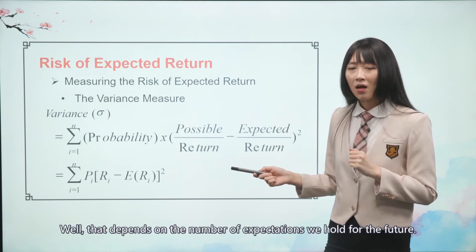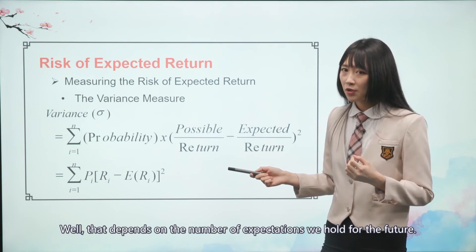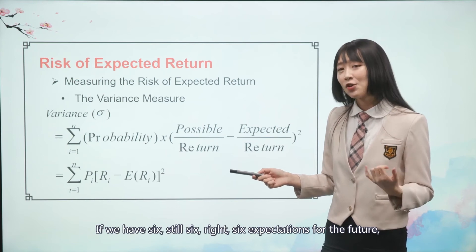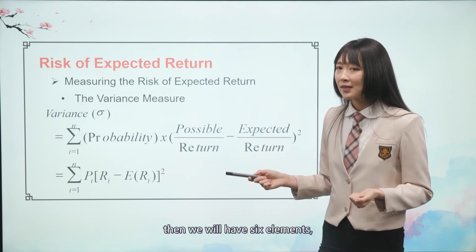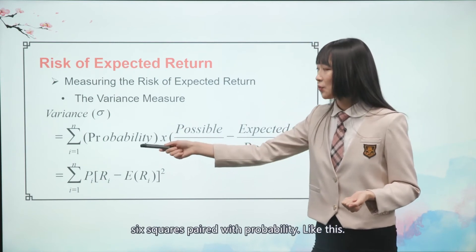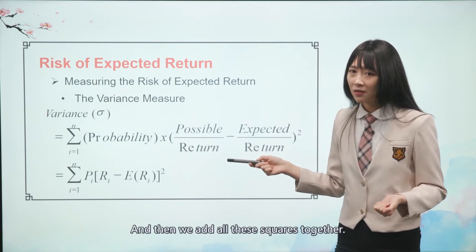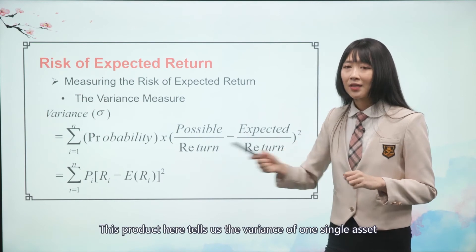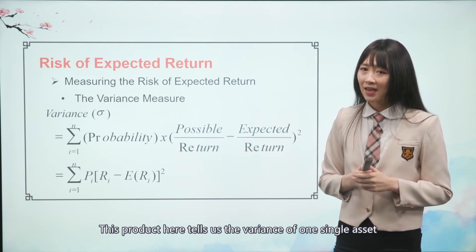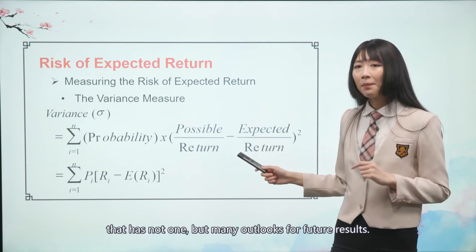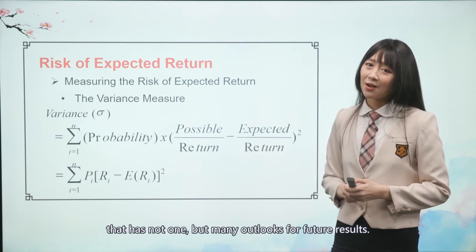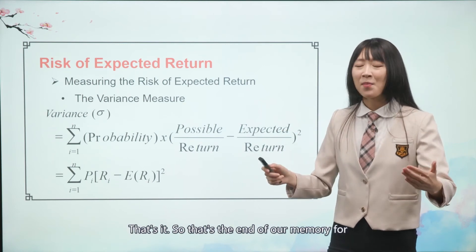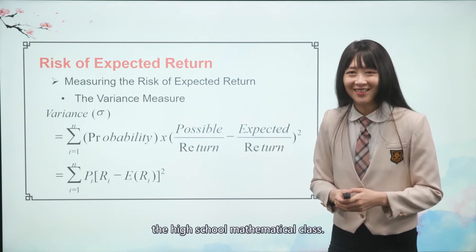How many elements like this will we have in the equation? That depends on the number of expectations we hold for the future. If we have six expectations for the future, then we will have six elements — six squares each paired with their probability. We add all these squares together, and this product gives us the variance of one single asset with many outlooks for future results.